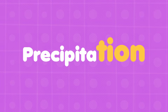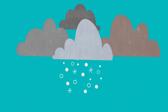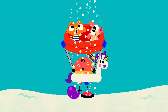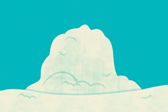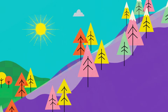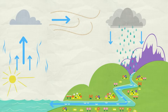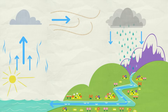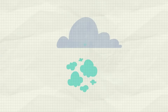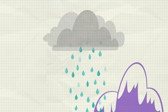You got it! If it's really cold, snow falls down. Then the sun warms up the air, the snow melts, and the whole cycle starts over again. The weather is constantly changing as it cycles around the planet. Evaporation. Condensation. Precipitation.